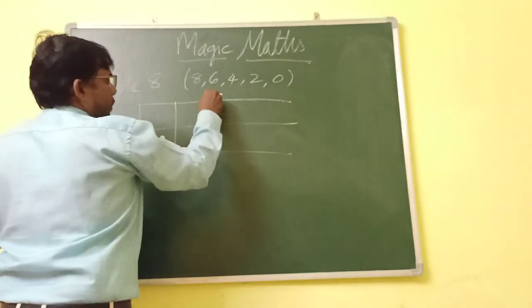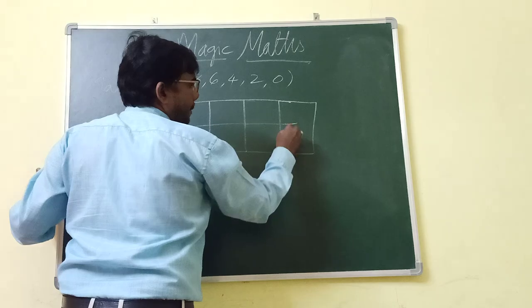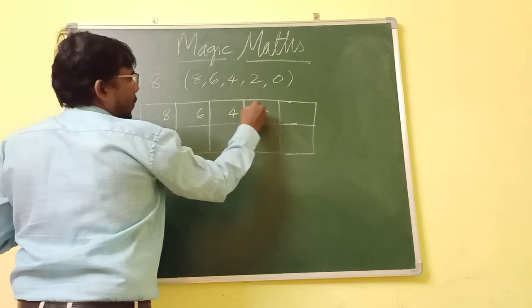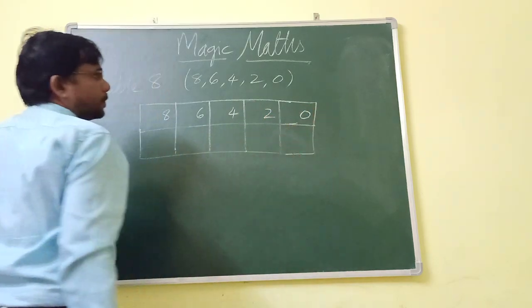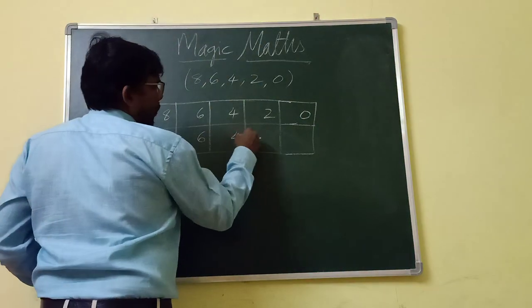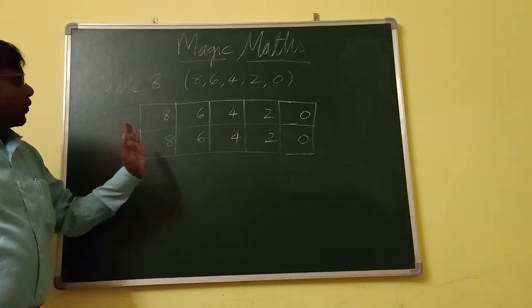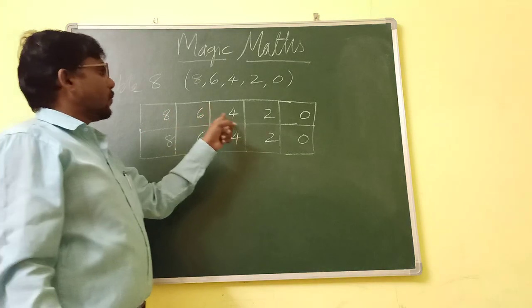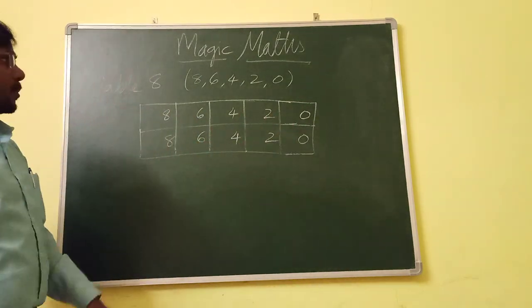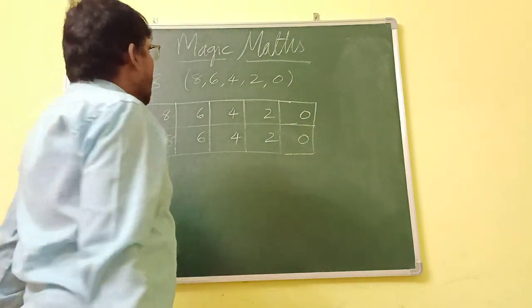These are the patterns to be followed in table 8. 1, 2, 3, 4, 5. So, 8, 6, 4, 2, 0. The same thing again. 8, 6, 4, 2, 0. In table 2 also, we wrote 0, 2, 4, 6, 8, then 2, 4, 6, 8, 0. Now here, opposite type 8, 6, 4, 2, 0.